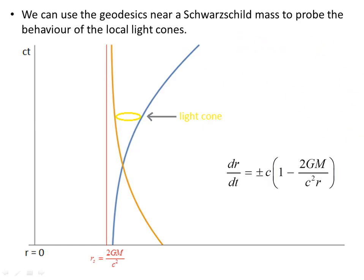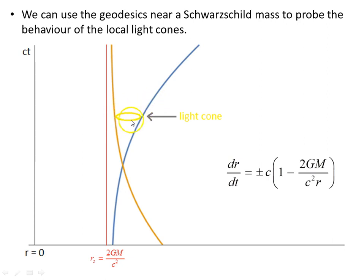We can use the geodesics near a Schwarzschild mass to probe the behaviour of the local light cones. The speed of light recorded by an observer outside the Schwarzschild radius depends on their location r; at r equals infinity this reduces to the familiar flat-space result. Looking at an inward geodesic and an outward geodesic, the light cone lies between these two, and we can investigate what happens to the light cones as we move closer to the Schwarzschild radius.